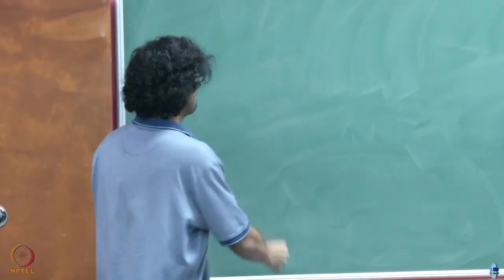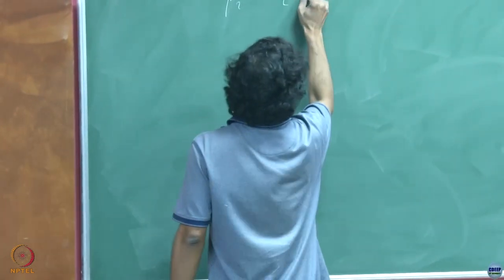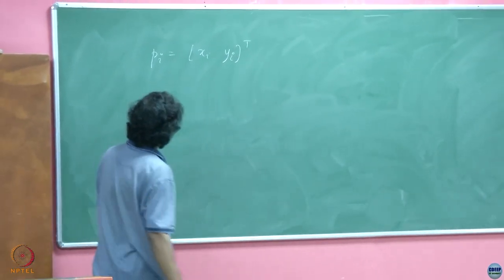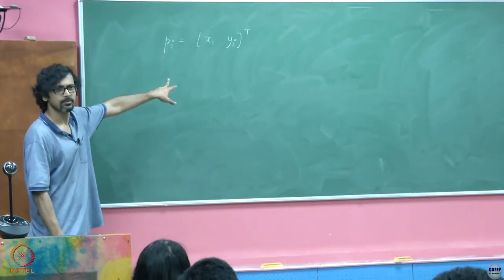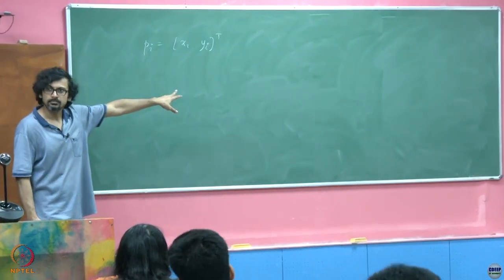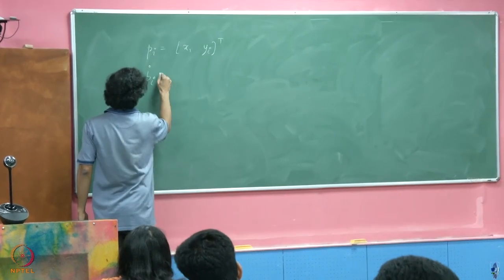What is the basic model going to be? If I represent P_i is equal to (x_i, y_i) as the position of the i-th ant, then the dynamics is going to look something like this.